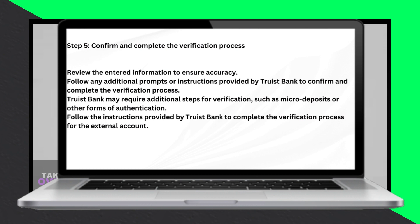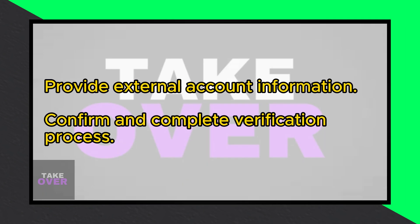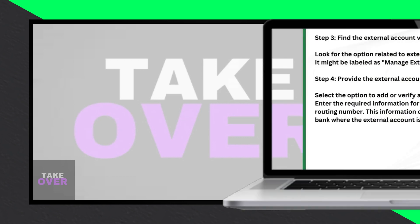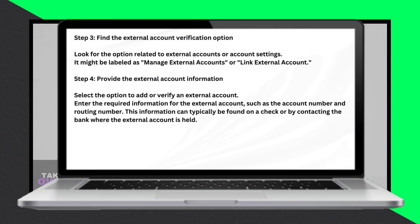Then, provide the external account information. Select the option to add or verify an external account and enter the required information, such as the account number and routing number. This information can typically be found on a check or by contacting the bank where the external account is held.